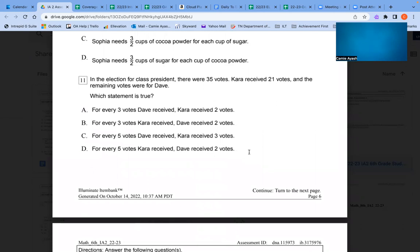Number 11: In the election for class president, there were 35 votes. Cara received 21 votes and the remaining votes were for Dave. Which statement is true? A. For every 3 votes Dave received, Cara received 2 votes. B. For every 3 votes Cara received, Dave received 2 votes. C. For every 5 votes Dave received, Cara received 3 votes. D. For every 5 votes Cara received, Dave received 2 votes.